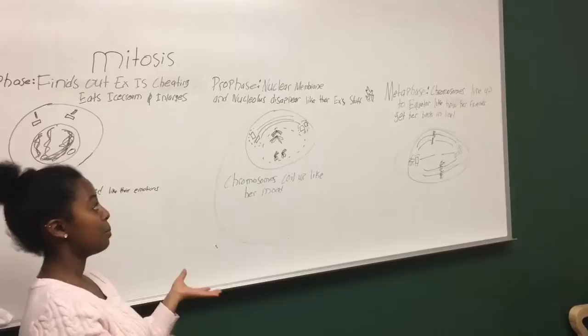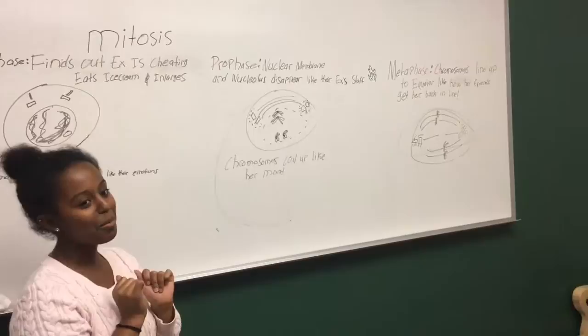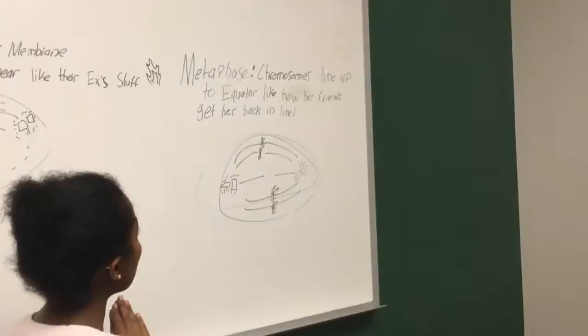Next is prophase. And this is when the nucleus and membrane and nucleolus disappear, like their ex's stuff. And then the chromosomes coil up, like her emotions.